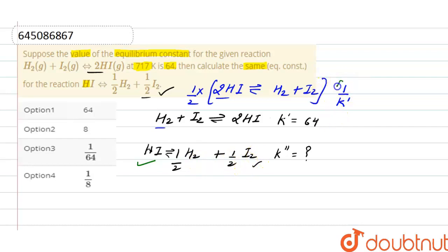That means equilibrium constant will raise the power of equilibrium constant by 1 by 2. So the equilibrium constant for the main reaction, that is K double dash for this given reaction, it is equals to K dash raised to the power 1 by 2.